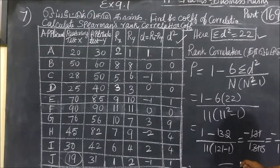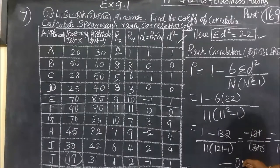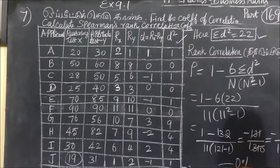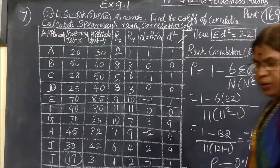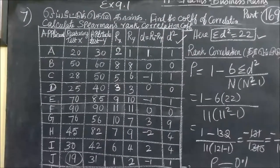So this answer is 0.1. Rho equal to 0.1.